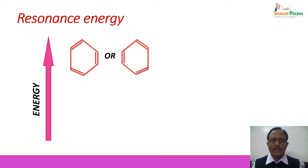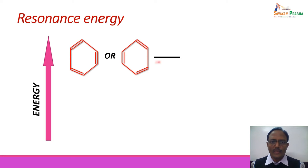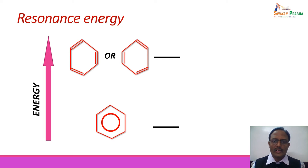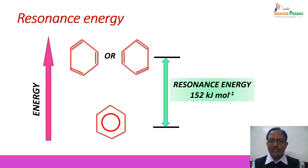Consider benzene as an example. If benzene is considered as a combination of two structures with three double bonds and three single bonds, these two structures have some associated energy. The resonance hybrid will have lower energy than these structures, and the difference between the two energies is the resonance energy. For benzene, the resonance energy is found to be 152 kJ/mol — the energy released due to delocalization of electrons, acting as the driving force for the resonance phenomenon.